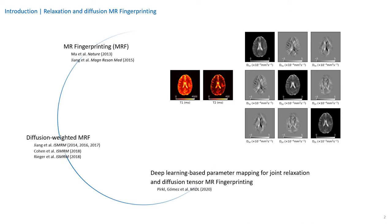We go one step further and propose an MRF scheme which encodes orientational diffusion information. To jointly reconstruct quantitative maps of T1, T2, and the full diffusion tensor, we pair this highly accelerated acquisition with a CNN-based regression. We learn the nonlinear relationship between the diffusion-sensitized MRF signals and the underlying tissue parameters, as conventional dictionary matching is intractable in such higher parametric spaces.